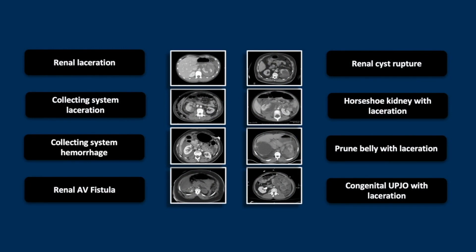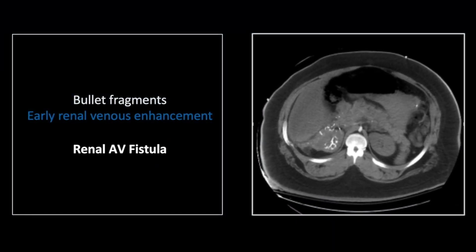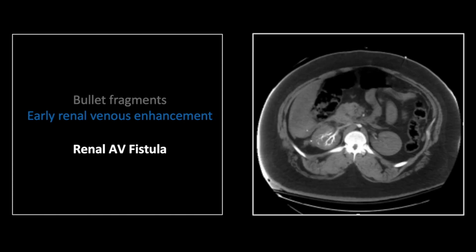Our next case is a renal arteriovenous fistula related to a gunshot wound, as so many of these injuries are. You can see small metallic bullet fragments lying along the tract of the bullet, which passes across the anterior aspect of the right kidney. You can also appreciate the right renal venous enhancement pattern present here, and compare that to the absence of any nephrogram in the left kidney. This is an early arterial phase scan, so it's the left kidney that is normal.